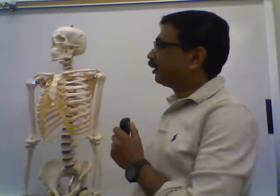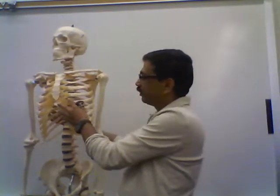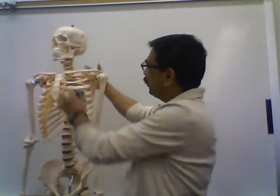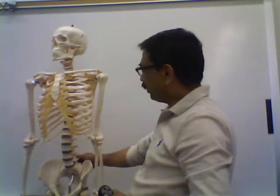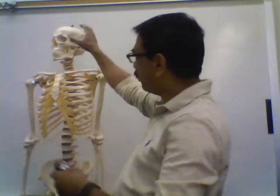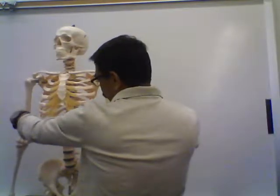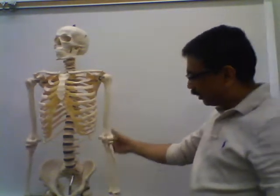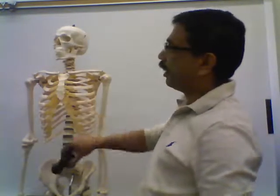First we will talk about the axial skeleton, which consists of the skull, thoracic cage, and the vertebral column. These three structures together form the axial part of the skeleton. Another part of the skeleton is the appendicular part, which consists of the bones of the upper and lower limbs. Today we will focus on the axial skeleton.